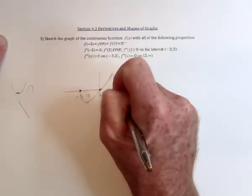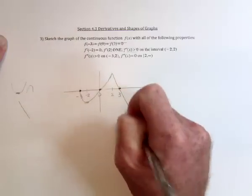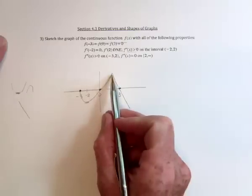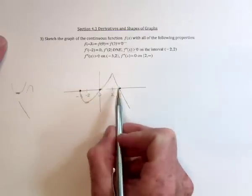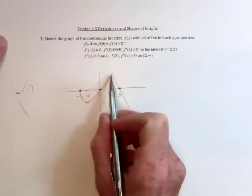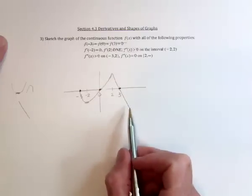So it's a hybrid, half cusp, half corner. So the derivative doesn't exist there. It goes through the points. The derivative equals 0 there. This is concave up, and this is neither concave up or concave down.